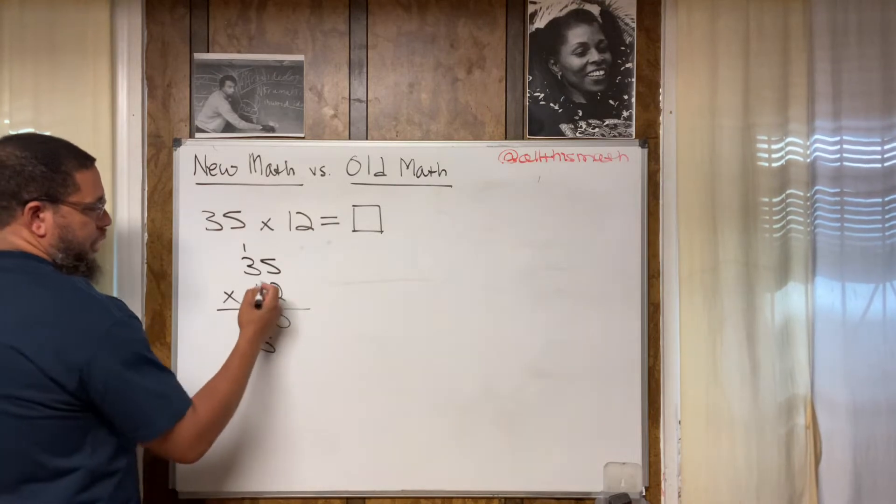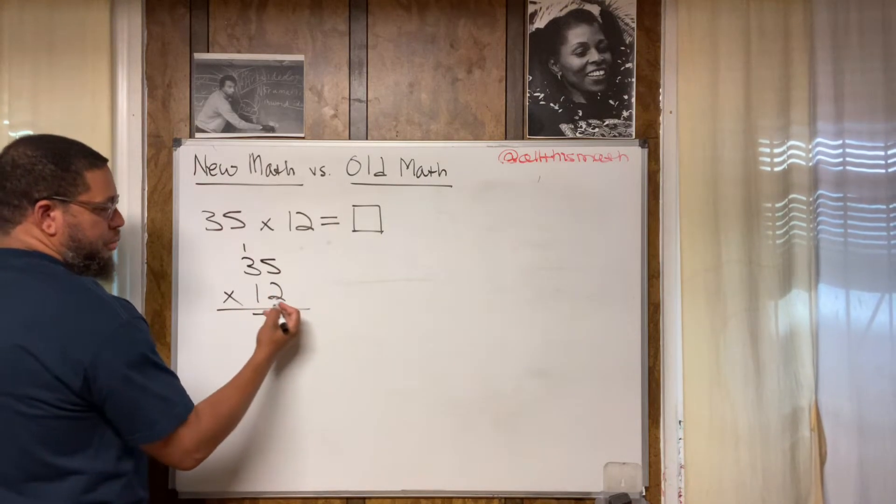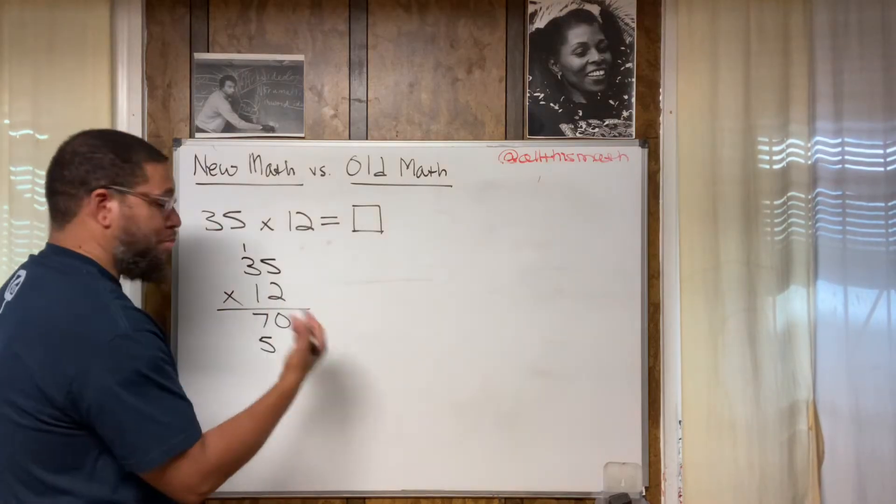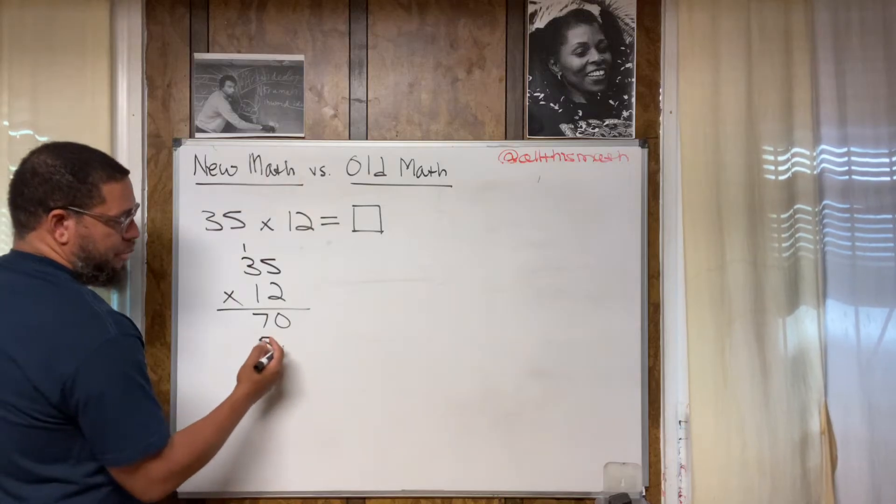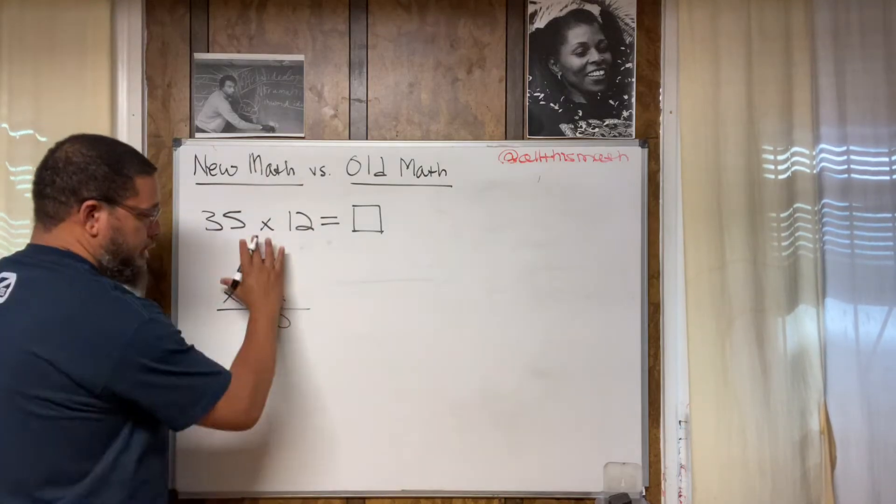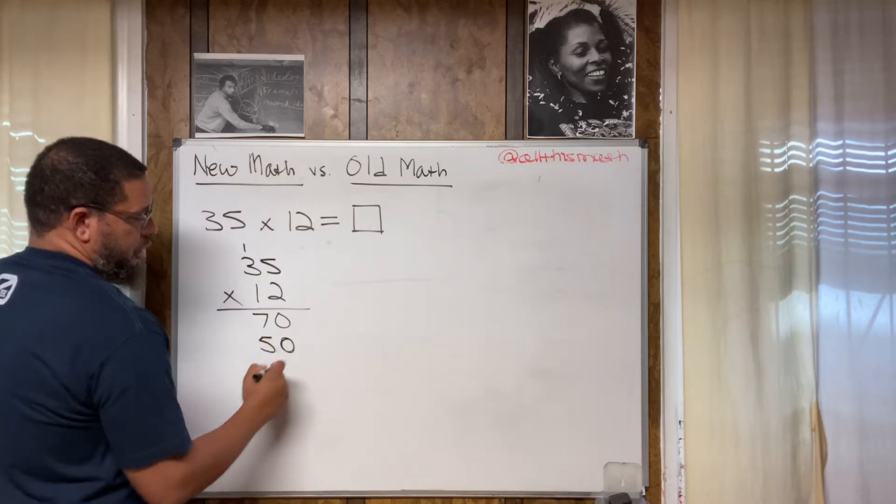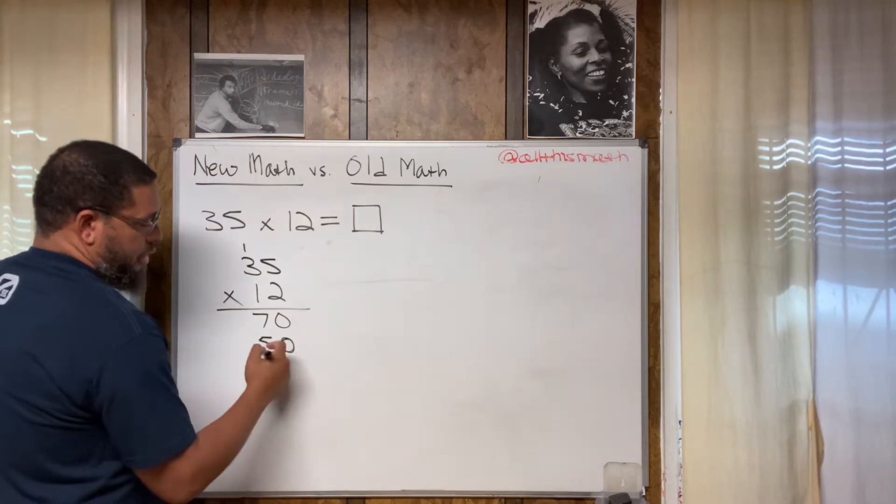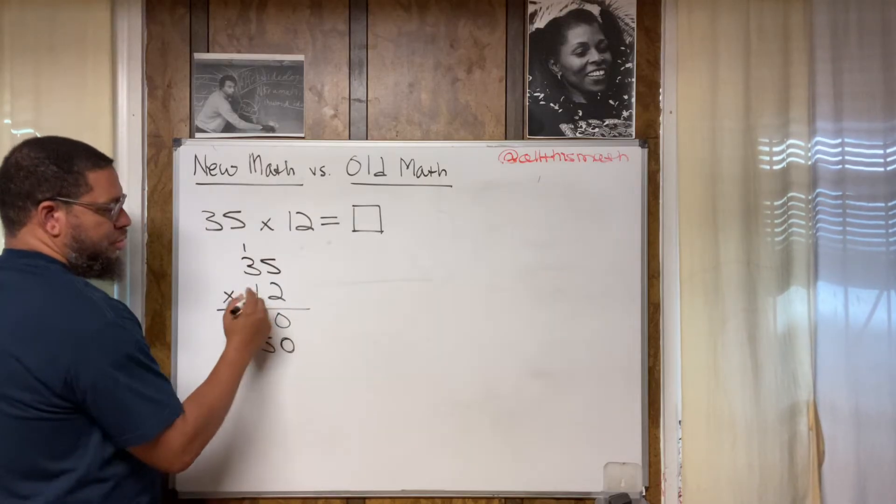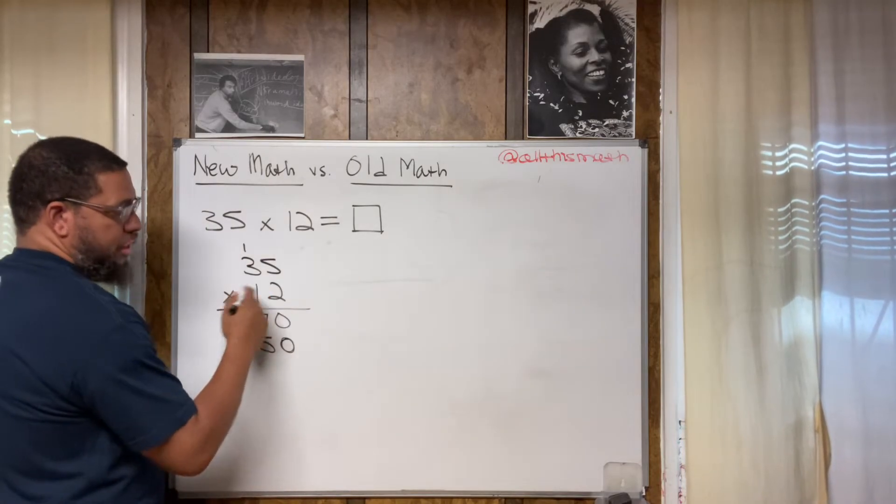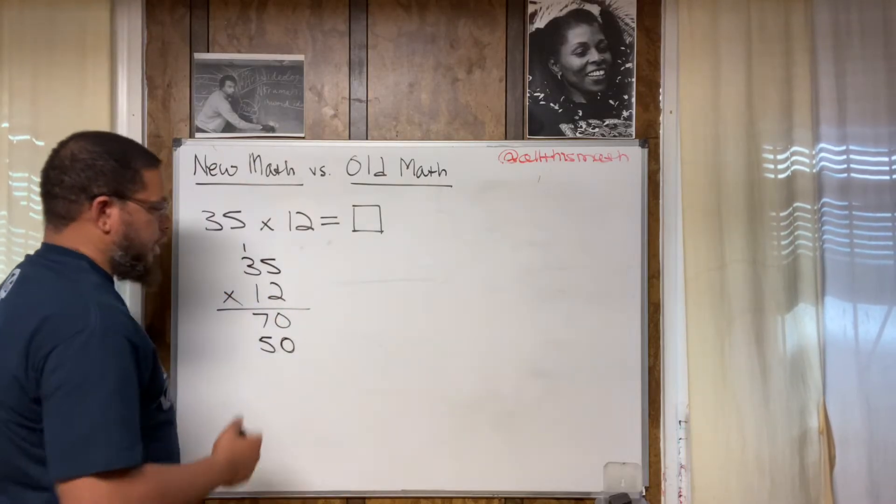Why do I indent one space? I indent one space because the number in this, the digit in this place is 10 times bigger than the digit in this place. So because it's 10 times bigger, we got to show that by moving the product over one space, which means that's 10 times bigger. That's why some teachers, when they teach this method, they tell the students to put a zero in this space right here. So because if they didn't, then they would be essentially saying that one times five is five and it is, but really this is not a one. This is really a 10 in real life.